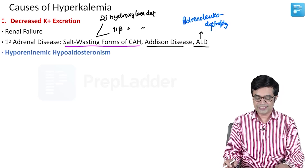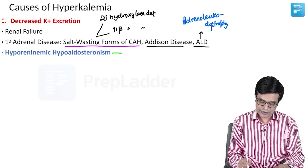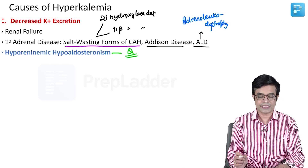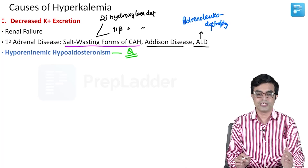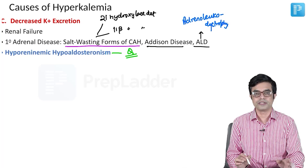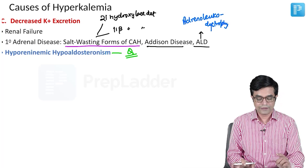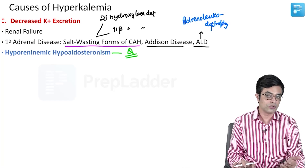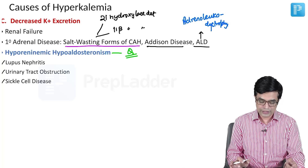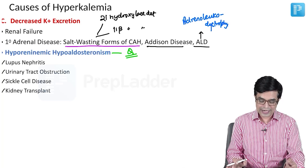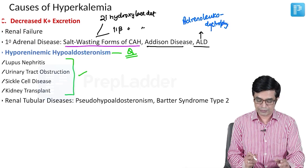Hyperkalemia can also be seen in hyporeninic hypoaldosteronism — highlighted because an MCQ on this was asked in a Central Institute exam: which of the following are causes of hyporeninic hypoaldosteronism except? The causes of hyporeninic hypoaldosteronism cause decreased potassium excretion leading to hyperkalemia, and they include lupus nephritis, urinary tract obstruction, sickle cell disease, and post-renal transplant. These four are the important causes to remember.